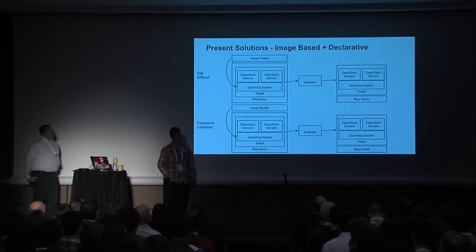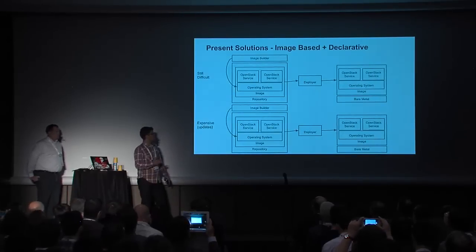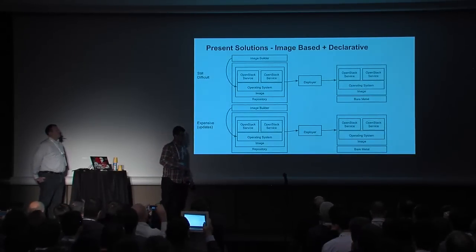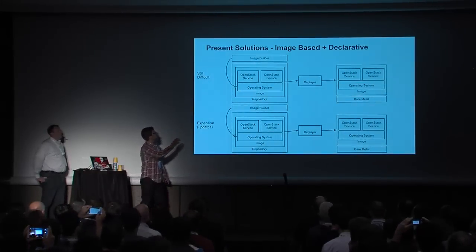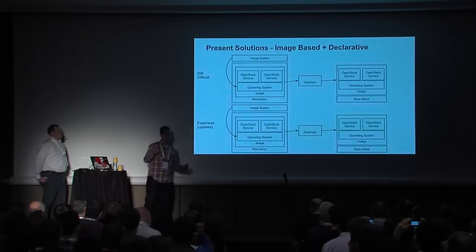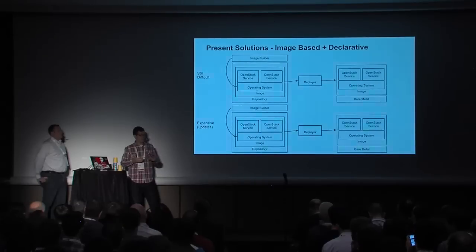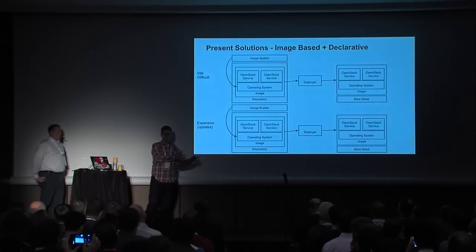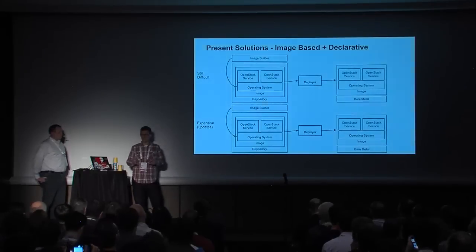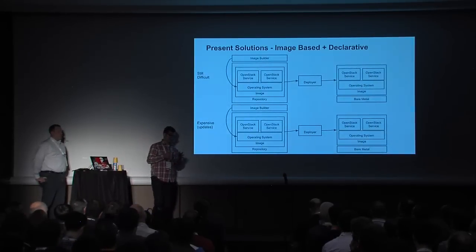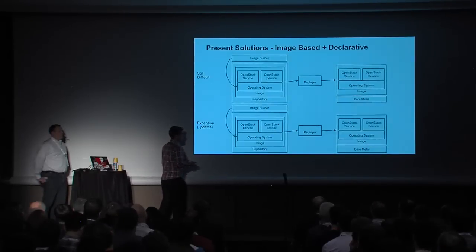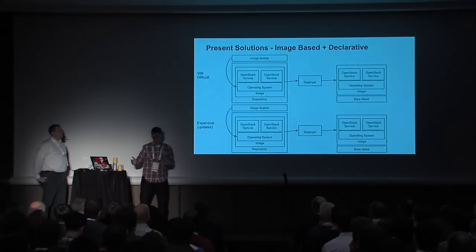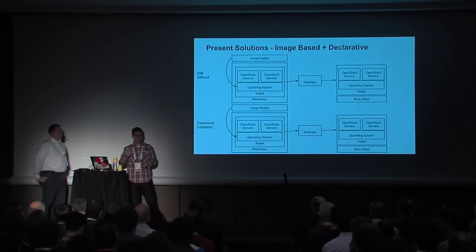The second approach is image-based deployment. A good solution, but it struggles in two areas. First, it's still difficult — you face the same dependency problem earlier in your lifecycle when assembling the image, figuring out how to layer Keystone, APIs, and other services onto that image. Second, updates are expensive — if you have to push an entire image down to the system every time you want to update, that's a costly process.